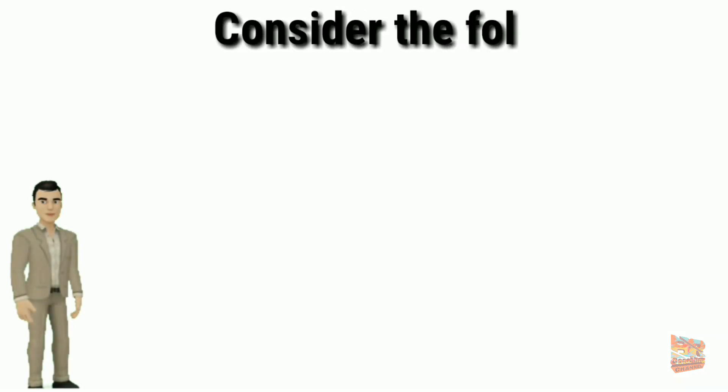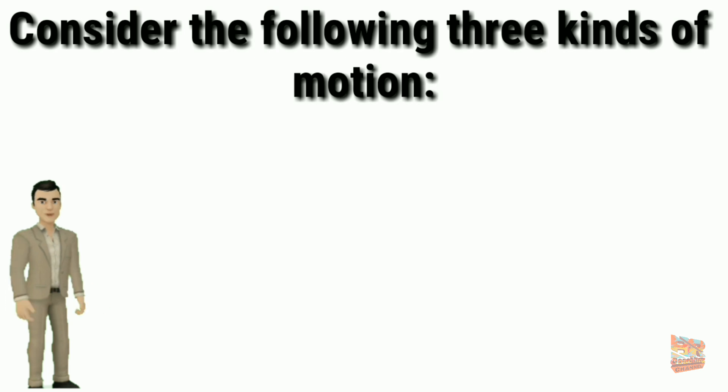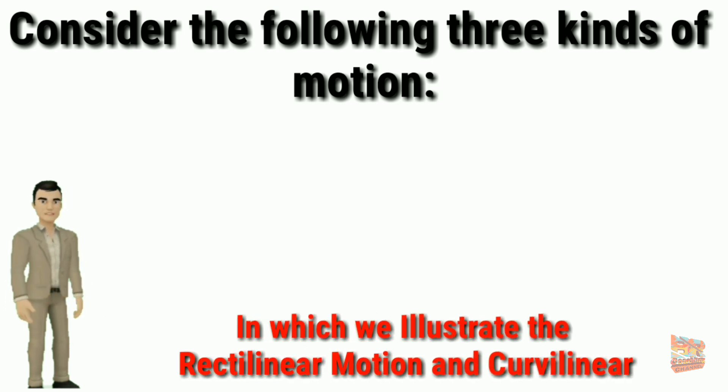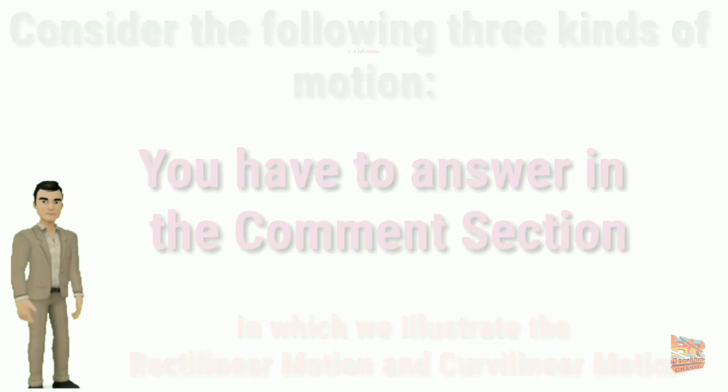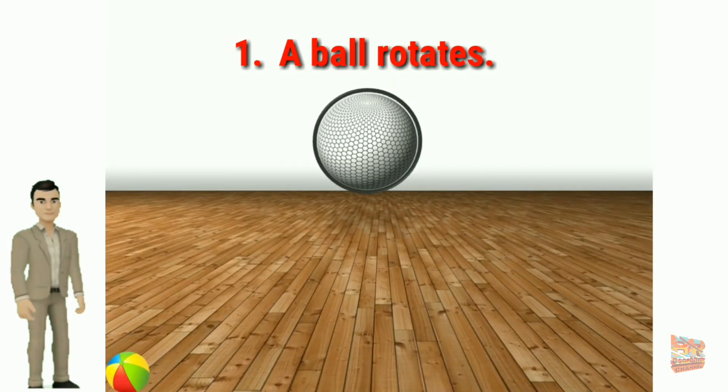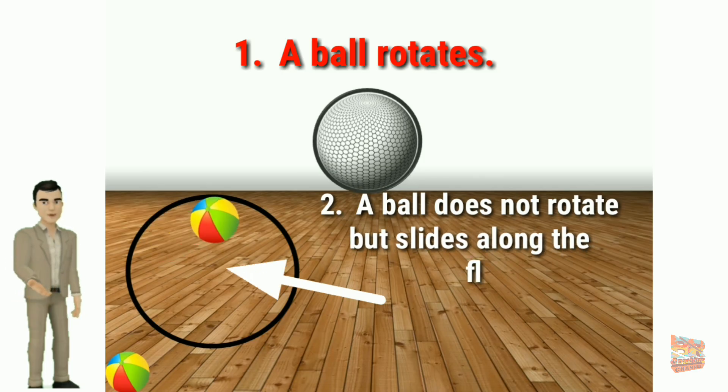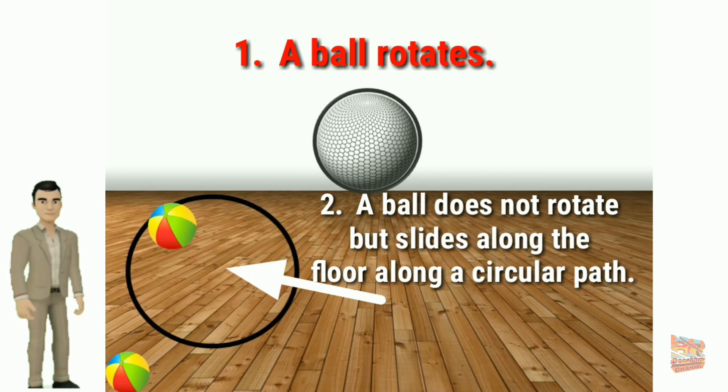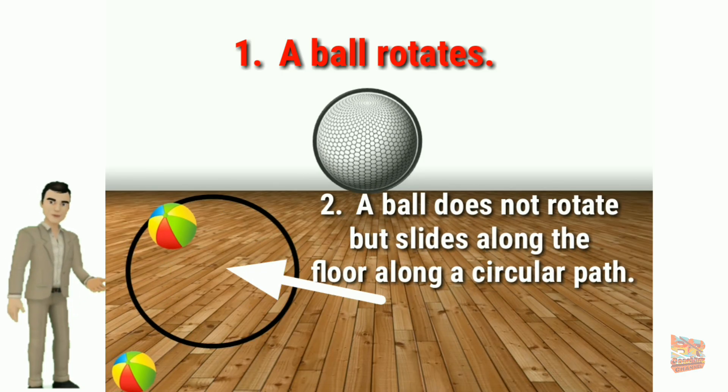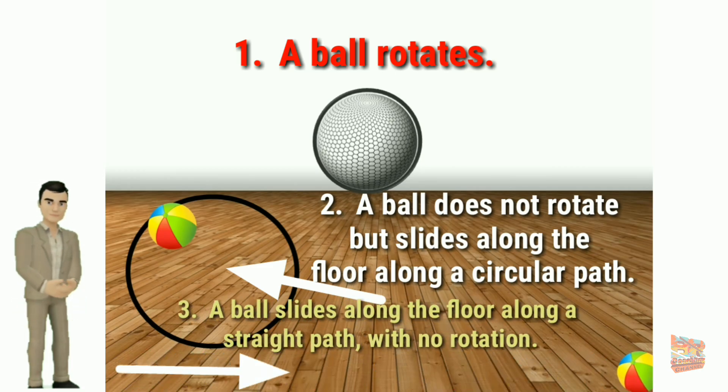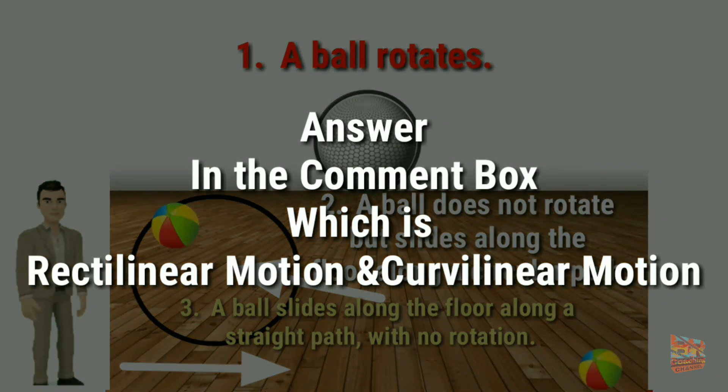Now consider the following three kinds of motion in which we illustrate the rectilinear and curvilinear motion. And you have to answer in the comments section. First, a ball rotates. Second, a ball does not rotate but slides along the floor along a circular path. Third, a ball slides along the floor along a straight path with no rotation. Answer in the comment box.